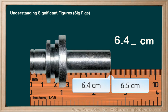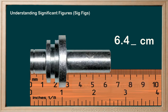If we look closer we can see that it's roughly halfway between six point four and six point five. It's definitely not six point one or two, and it's definitely not six point eight or nine — it's somewhere in between these. Our best guess here would be six point four five centimeters.